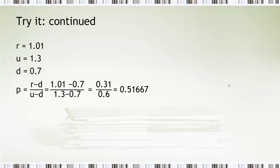So we calculate the probability. It's a little messier. It's 51.667 for a probability. So r is 1.01, u is 1.3, d is 0.7. So remember this is symmetric now. 30% up or 30% down.